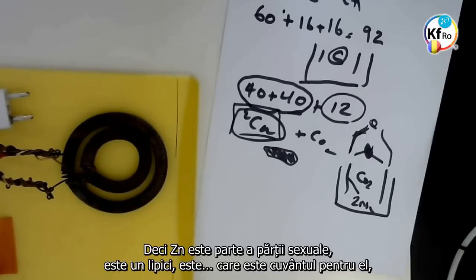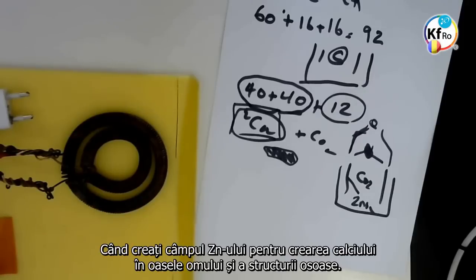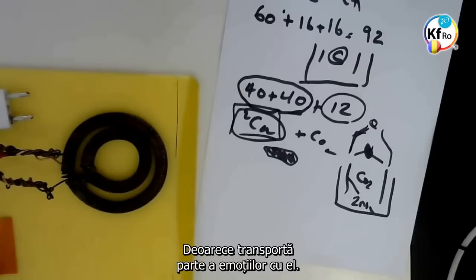So Zinc is part of the essential part, it's a glue, it's an agent, it's a catalyst. When you create a Field of the Zinc for the creation of the Calcium in the body of the Man, creating the bone structure, because it carries part of the Emotion with it.